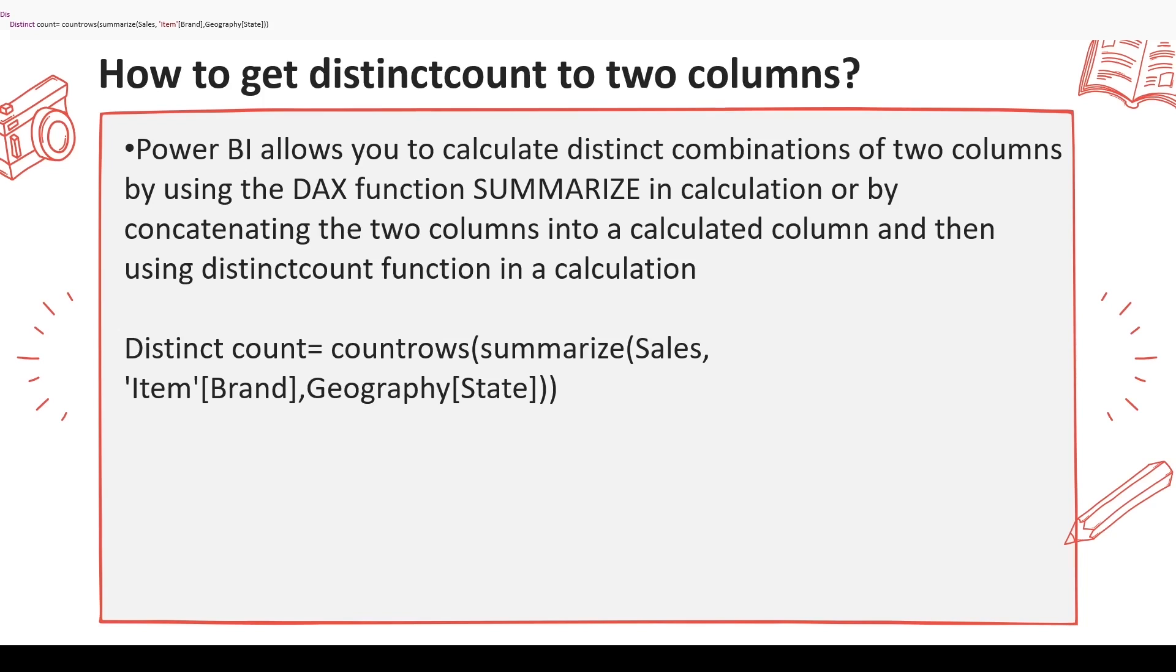You have to take the center table if they are coming from dimensions. Both of them in this case are coming from dimensions - Item Brand and Geography. If they are coming from the same table, you can take that particular table. If they are from, let's say, the Geography table, both of them, instead of taking the Sales or center fact table, you could have taken the Geography table. But in this case I'm taking the center fact table in the table expression.